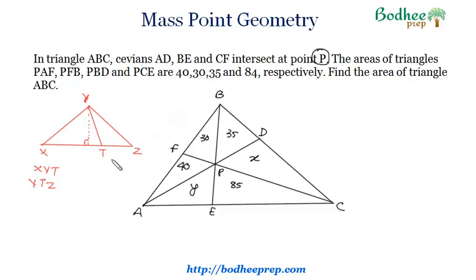So if height is common, then the area of these two triangles will solely depend upon their base, or the ratio of the area of these two triangles will solely depend upon their base. So we can say that the ratio of the area of the triangle would be XT over TZ. So this is a simple concept which we'll be using apart from mass point geometry to get the answer.